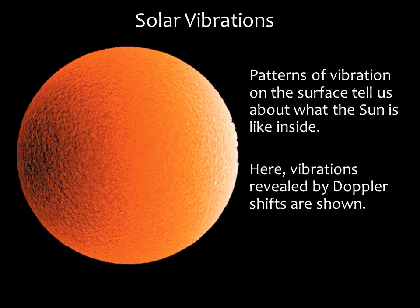Another way to learn about the inside of the sun is to observe vibrations on the sun's surface. This is somewhat similar to what geologists do when they study the vibrations that earthquakes cause on Earth. The patterns of vibration on the surface tell us about what the sun is like inside. Light from portions of the surface that are coming towards us are blue shifted, and light from portions that are falling away from us are red shifted. The vibrations are small but measurable.